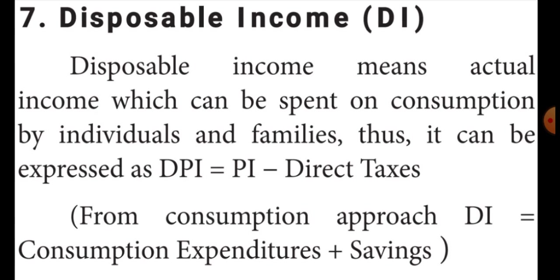The last one is disposable income, DI. Disposable income means actual income which can be spent on consumption by individuals and families. It can be expressed as DI equals PI minus direct taxes. From the consumption approach, DI is equal to consumption expenditure plus savings.